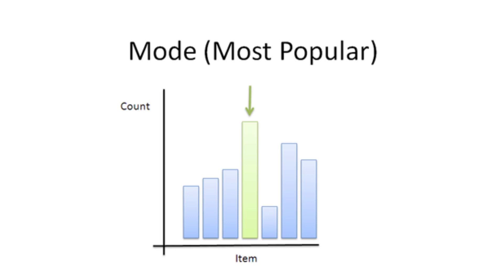I would recommend you follow these two steps to calculate the mode of any dataset. First, find the frequency of every unique number in the dataset, and second, determine which number has the highest frequency.